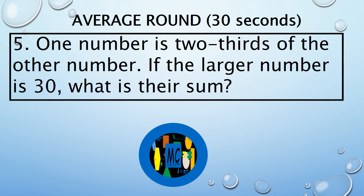One number is two-thirds of the other number. If the larger number is 30, what is their sum?